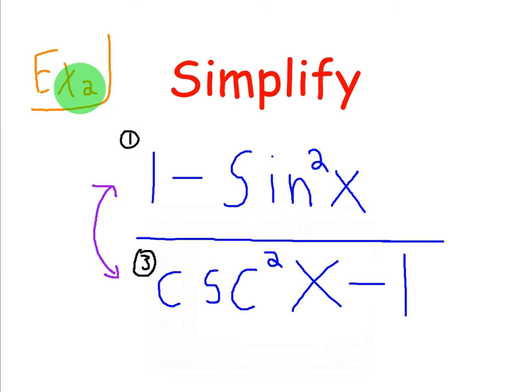Let's take a look at another example of simplifying expressions using Pythagorean identities. Let's go ahead and read this one together. It says 1 minus sine squared of x all divided by cosecant squared of x minus 1.